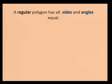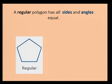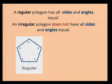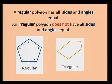Now, if we have a polygon with all the sides and angles equal, we call it a regular polygon. As you can see on the diagram, all the sides are equal and the angles also are equal. If we have a polygon that does not have all sides and angles equal, it is called an irregular polygon. As you can see on the diagram, the sides are different and the angles also are of different sizes.